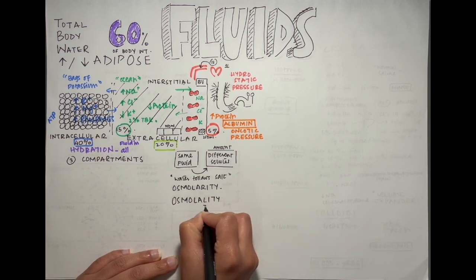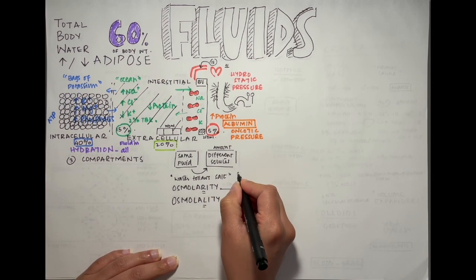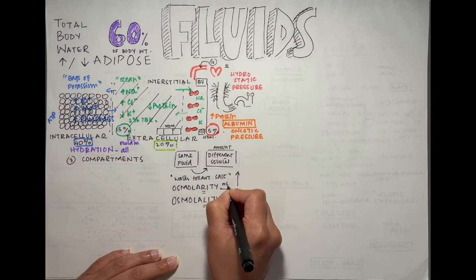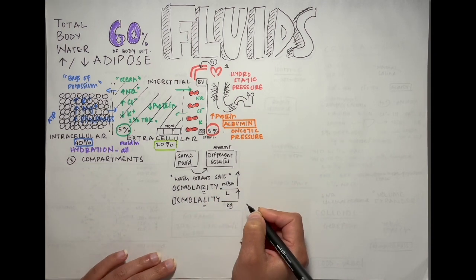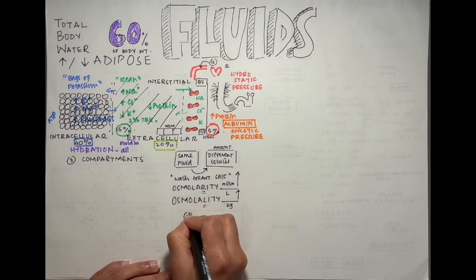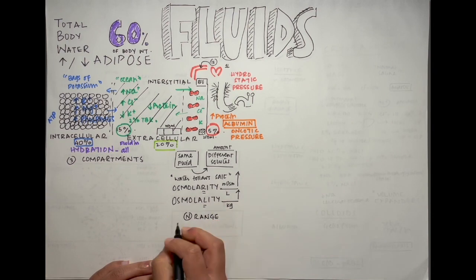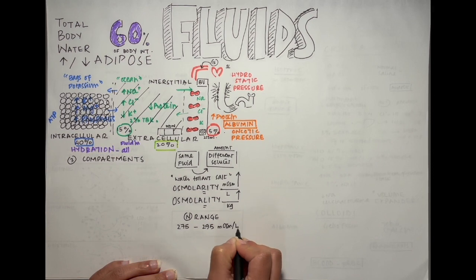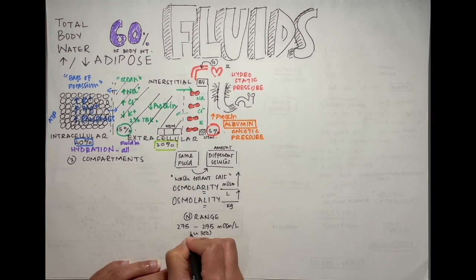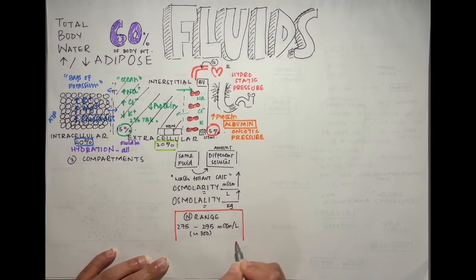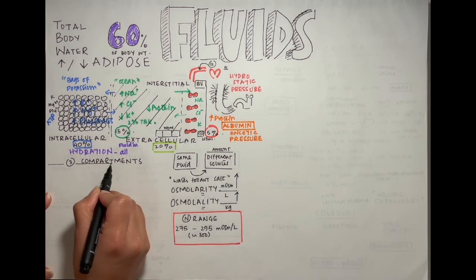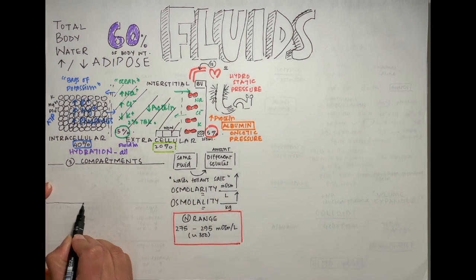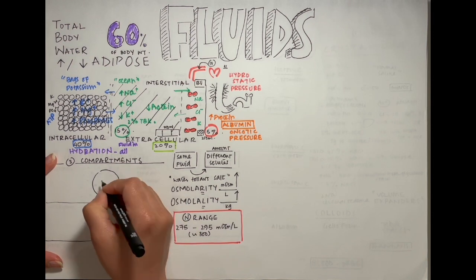The amount of solutes is measured with osmolarity or osmolality. The difference between osmolarity and osmolality is not just the spelling but also that it's measured in milliosmoles per liter whereas osmolality is in kg. The normal range of the human plasma is around 275 to 295 milliosmoles per liter, or you can just say around 300. Osmolarity is the same across all three compartments if everything is going well.